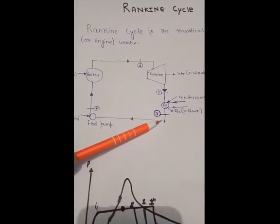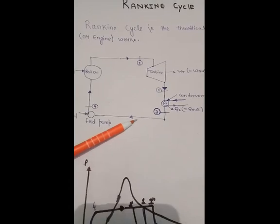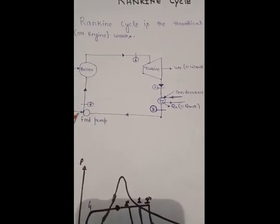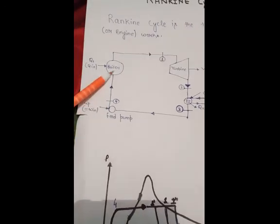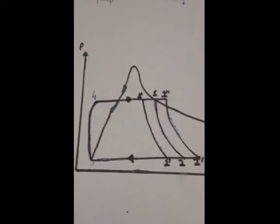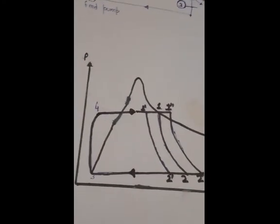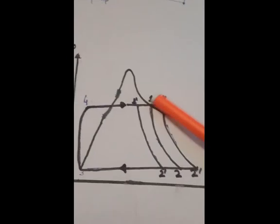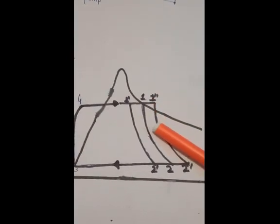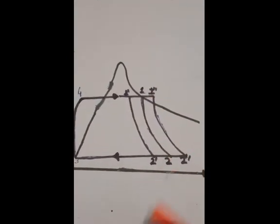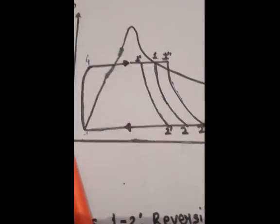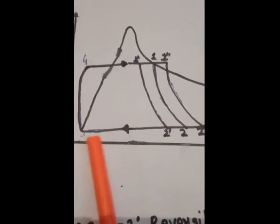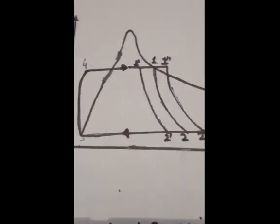After the condenser, it goes toward the feed pump where the pressure of liquid water is raised, and it is collected into the boiler. In a PV diagram, from 1 to 2, high pressure steam enters the turbine and mechanical work is obtained as the turbine shaft moves. From 2 to 3 is the heat rejection occurring in the condenser, and Q2 is the heat out from the condenser.